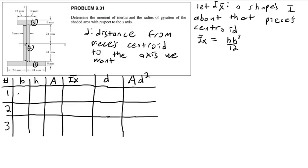Piece one has a b of 48 millimeters and a height of 6. Piece two has a b of 8 millimeters and a height of 48. Piece three has a base of 24 millimeters and a height of 6.